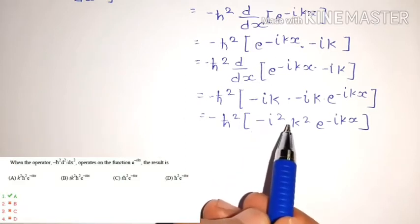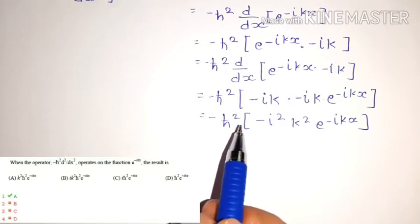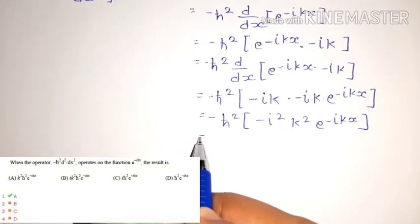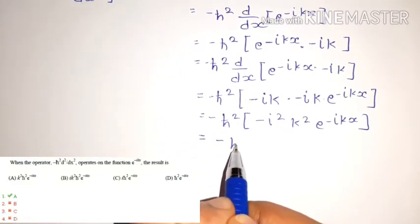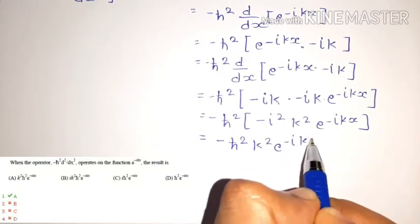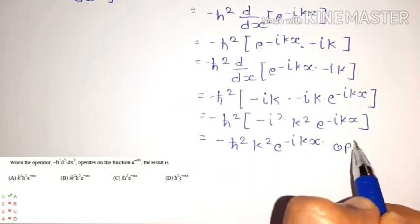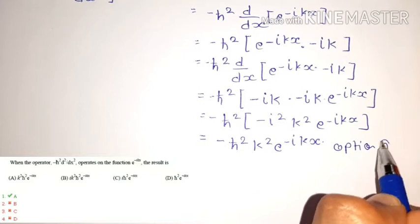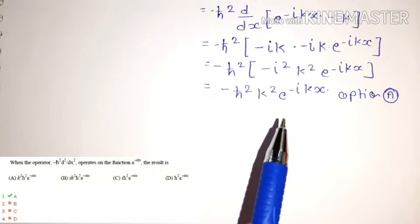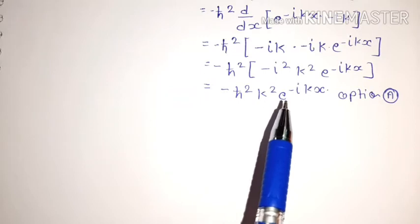Now, minus i² equals 1 (since i² = −1), so the value becomes minus ℏ² k² e^(-ikx). So option A is the correct answer for this question. That is how this question is solved. Let's move to the next question.